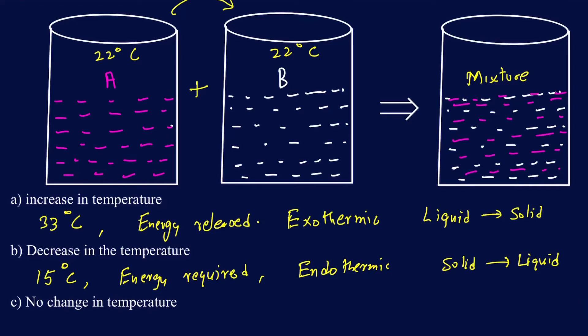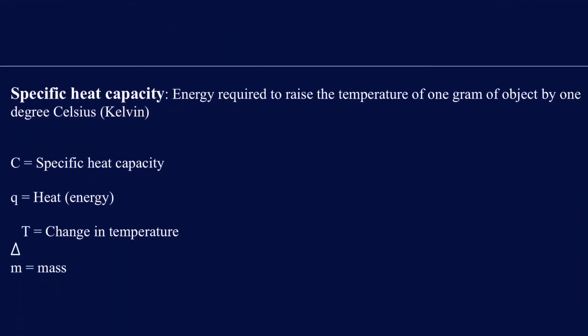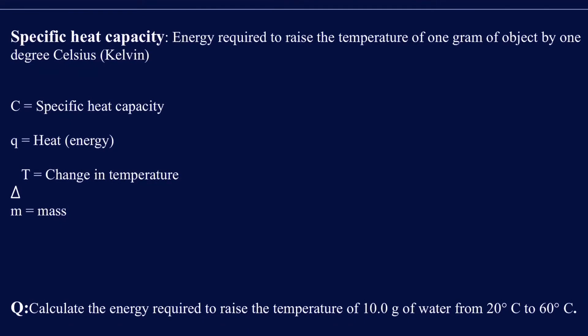On the other hand, if there is no change in temperature when you mix two solutions and nothing happens in terms of temperature, it's neither exothermic nor endothermic. So temperature and energy are obviously two different things, but you can relate them by observing: if energy is released, temperature goes up; if energy is required, the temperature of the surroundings goes down. This leads us to a term that actually relates temperature and energy with one another — that's called specific heat capacity.